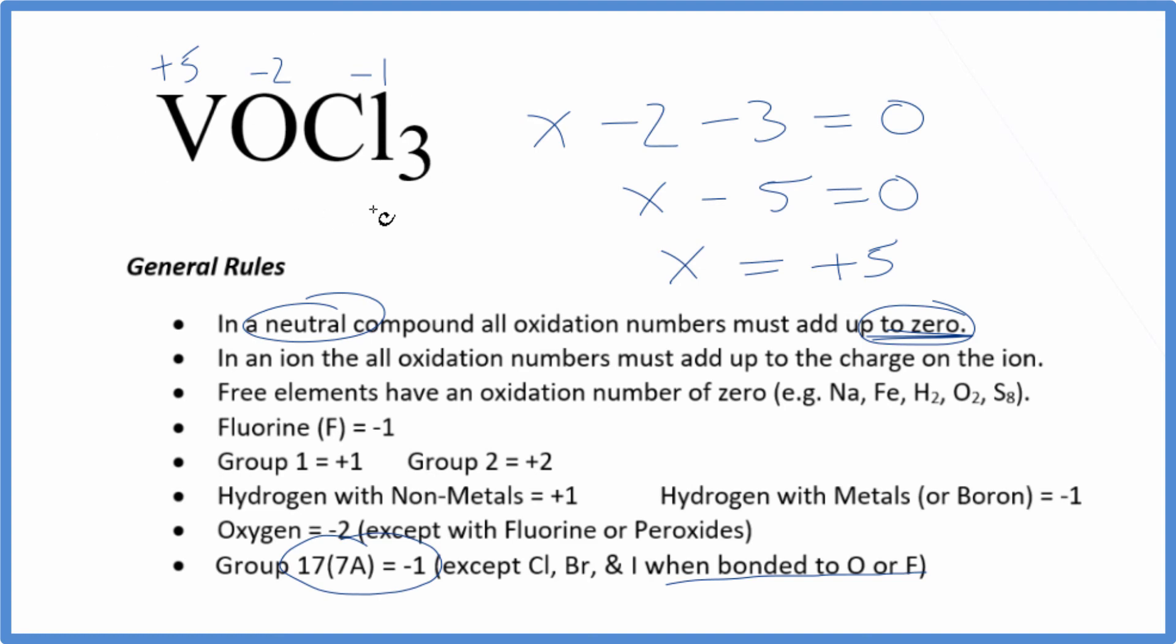If we add the oxidation numbers up for each atom, all of these oxidation numbers, they'll equal 0 because we have a neutral compound. This is Dr. B with the oxidation numbers for each element in VOCl3. Thanks for watching.